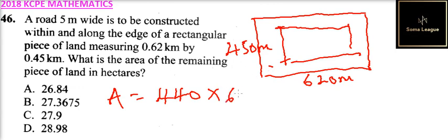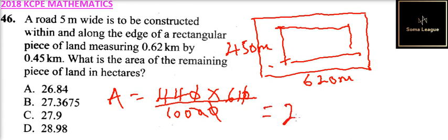610. And because these are meters, 1 hectare is equal to 10,000 meters squared. So we divide by 10,000. And when you simplify, you multiply that and you divide by 100 and that you should be able to get 26.84.